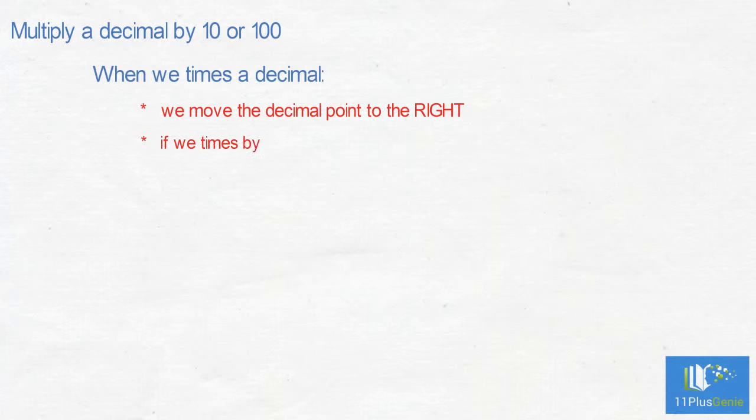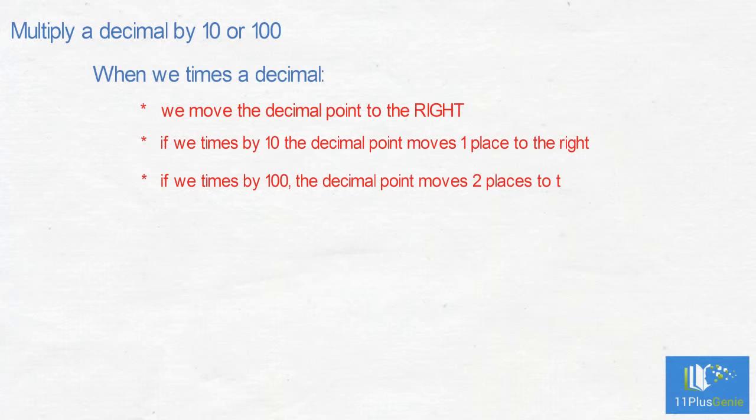If we times by 10, the decimal point moves one place to the right. If we times by 100, the decimal point moves two places to the right.